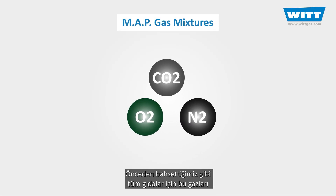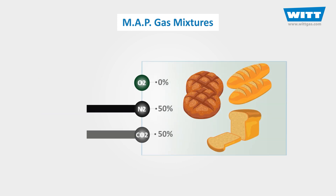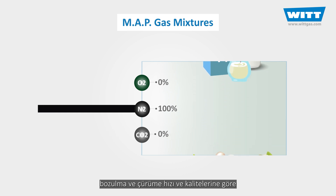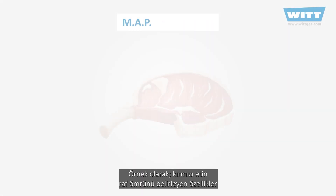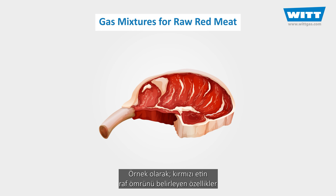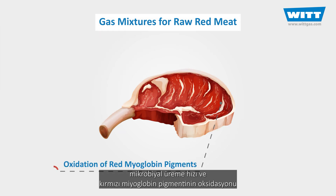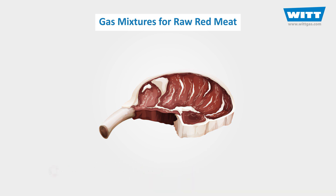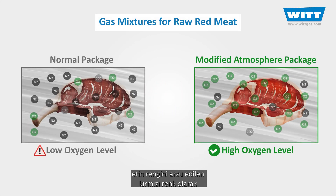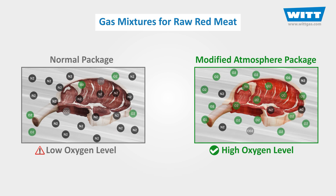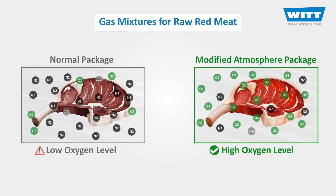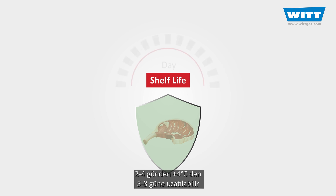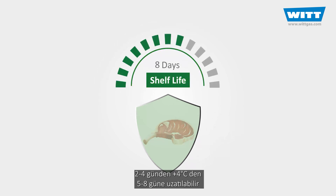We're not going to mix these gases in the same way for all kinds of foods. Depending on the type of food products and specific causes of their spoilage or quality deterioration, the gas mixture would be different. For example, mechanisms that limit the shelf life of raw red meats are microbial growth and oxidation of the red myoglobin pigment, converting it to oxidized brown metmyoglobin. For this reason, high concentrations of oxygen are necessary in order to maintain the desirable red colour for a longer period of time. With the right mixtures, the practical shelf life of consumer packed meat can be extended from two to four days to five to eight days at four degrees Celsius.